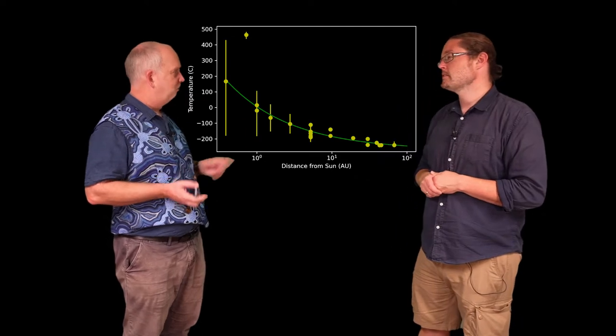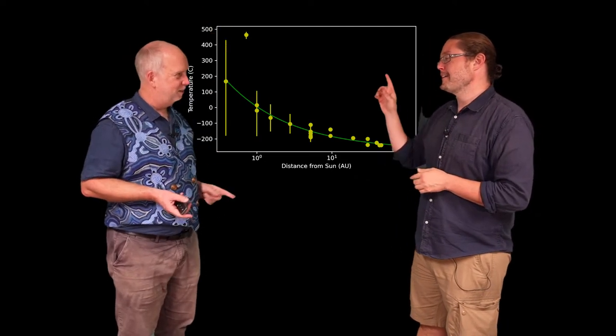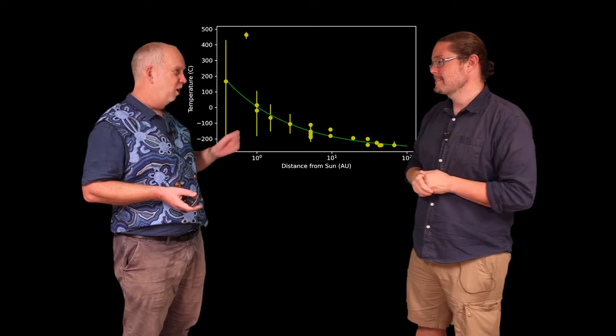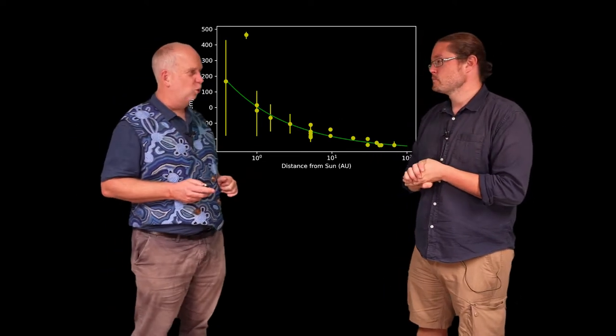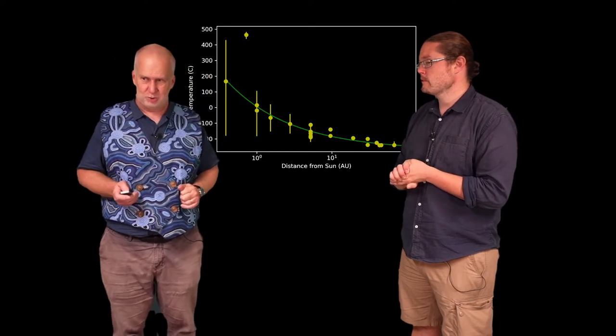But the two main exceptions are Venus is way hotter than it should be. Venus is not even close to this line. And the earth is a little bit too hot. So there's something going on here that means it's not quite as simple as heat in balances heat out.